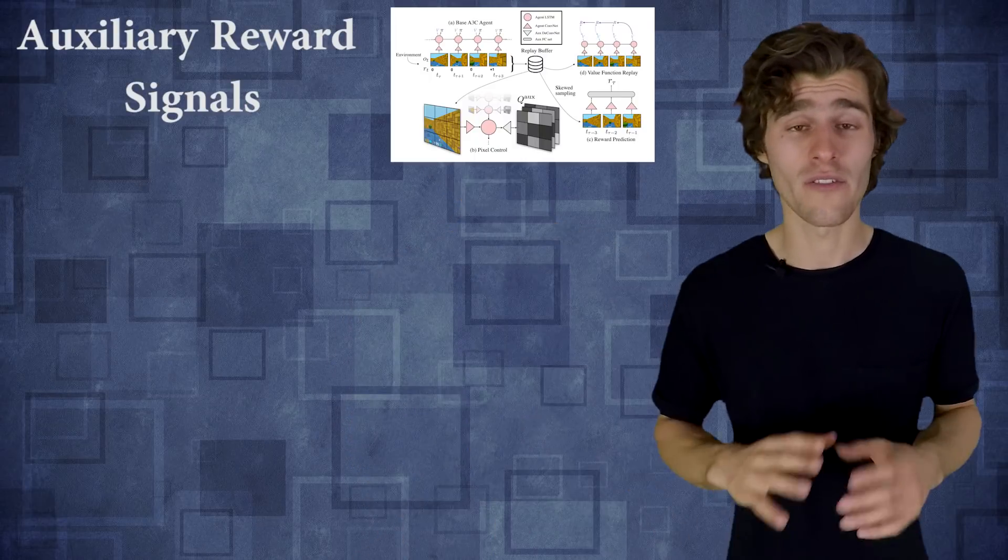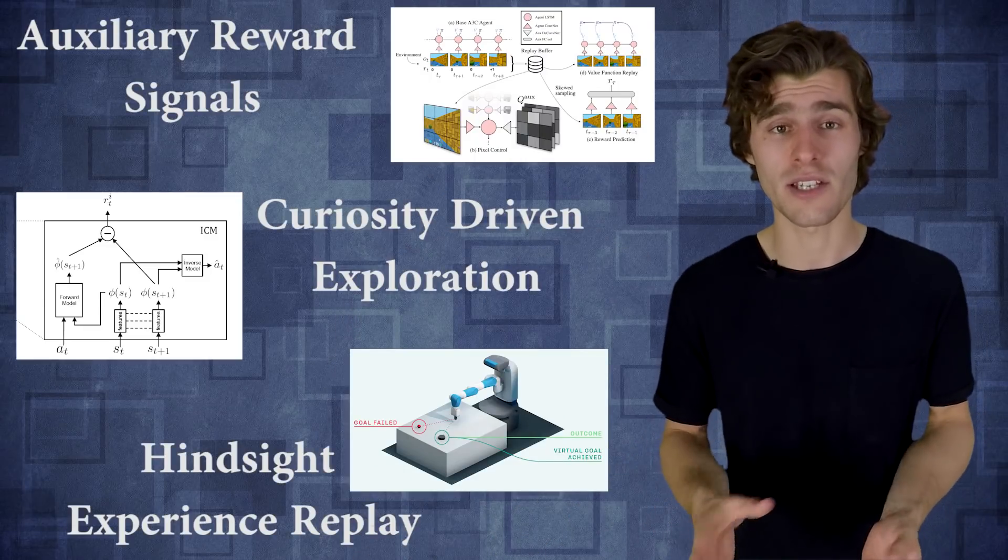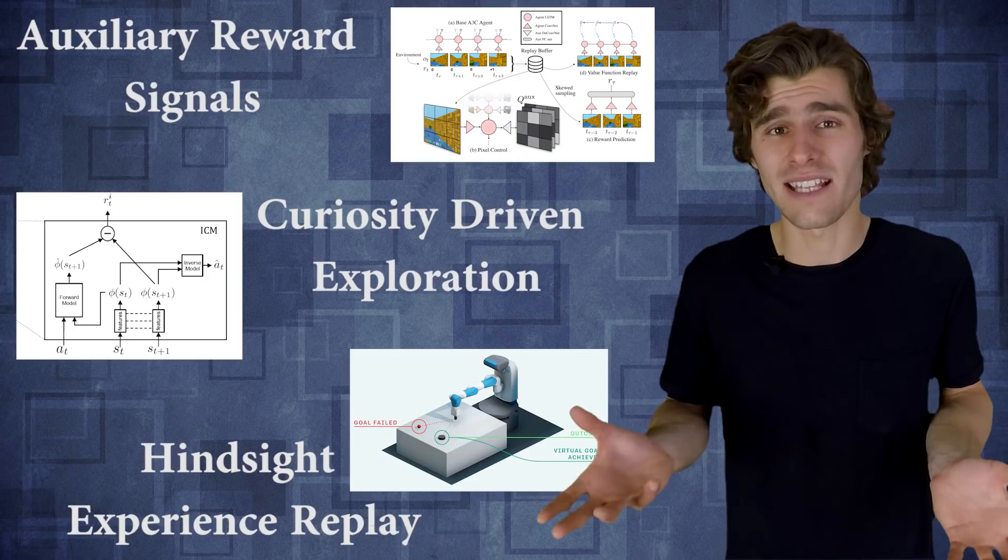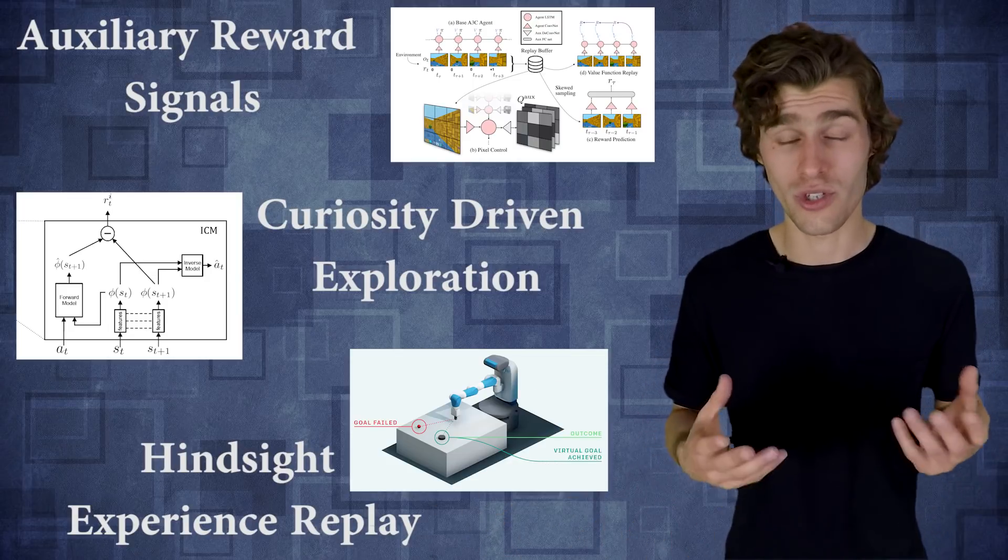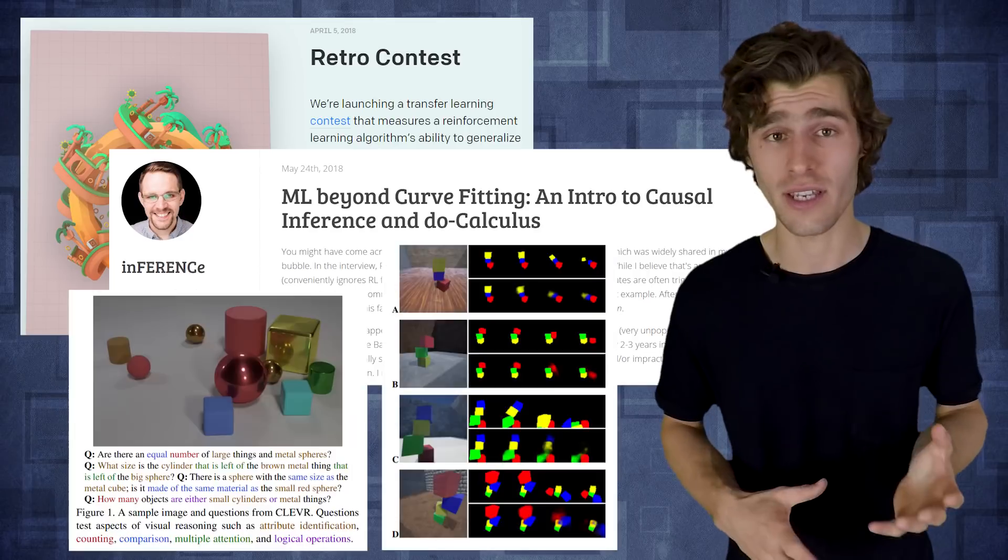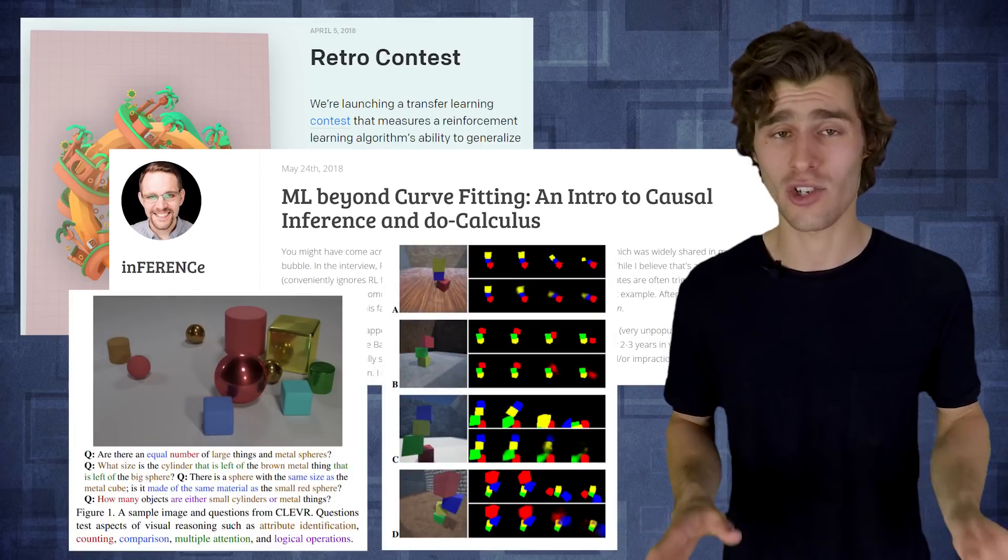So in summary, we've just seen a few very different approaches to augmenting sparse reward signals with dense feedback that I think hint at some of the first steps towards truly unsupervised learning. But despite the very impressive results that we've seen, there are still a lot of really challenging problems in reinforcement learning. So things like generalization, transfer learning, causality, intuitive physics, I mean these problems remain as challenging as ever.